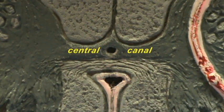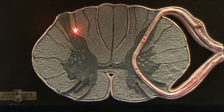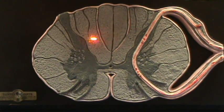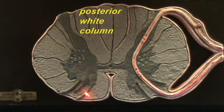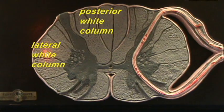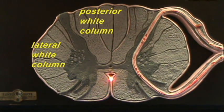This is where you find the central canal of the spinal cord. The region between the two dorsal or posterior horns is where you find the posterior white columns, or the dorsal white columns of the spinal cord. The region between the posterior horn and the anterior horn of the gray matter is where you find the lateral white columns. And in between the anterior horns, this is where you find the anterior white columns.